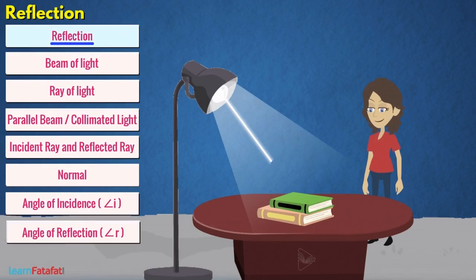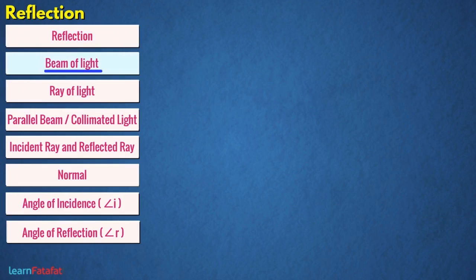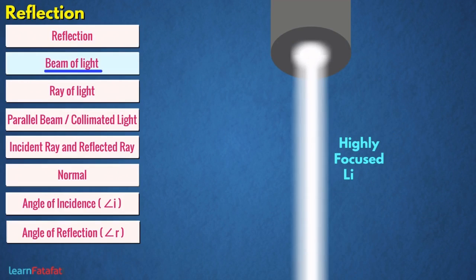Reflection: light when falling on an object bounces back from it. This phenomenon is called reflection. Beam of light: a highly focused light that goes in one direction is a beam of light.